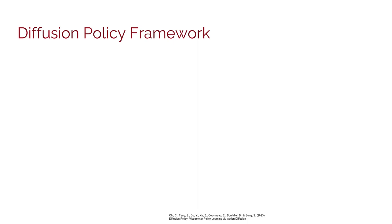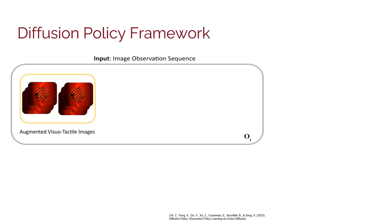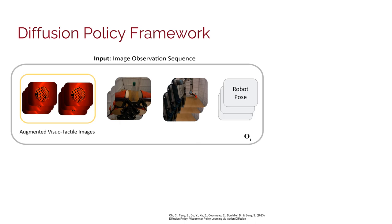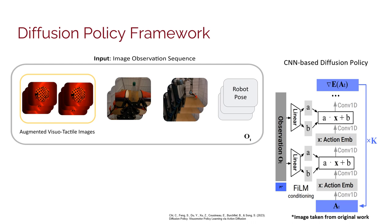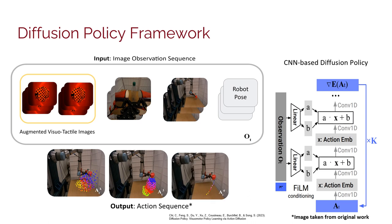Here we show the Diffusion Policy Framework. The input is an image observation sequence that contains the two visio-tactile images from both of the bubbles, the wrist camera view and the side camera view, as well as the robot pose which contains the 6D end-effector pose in gripper state. These are input to the CNN-based Diffusion Policy from the original work that contains film conditioning and a 1D U-Net to learn the gradient of the action distribution through k iterations of denoising where we start with a Gaussian distribution of actions at a-k and iterate k times to obtain the original trajectory from the training data.